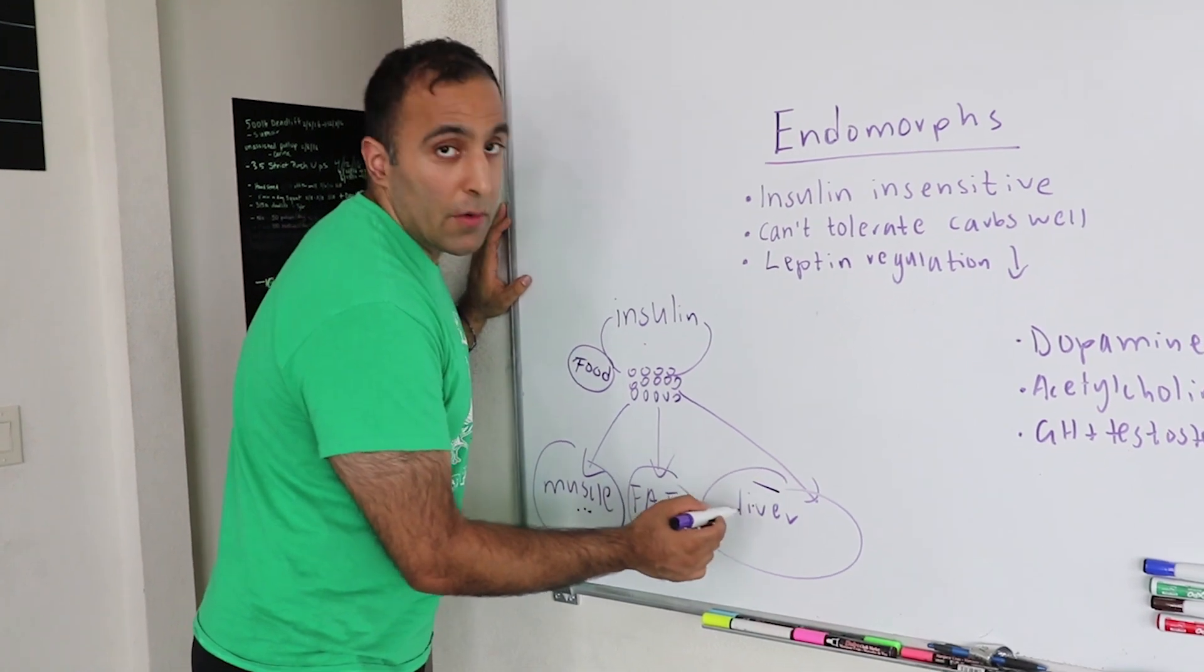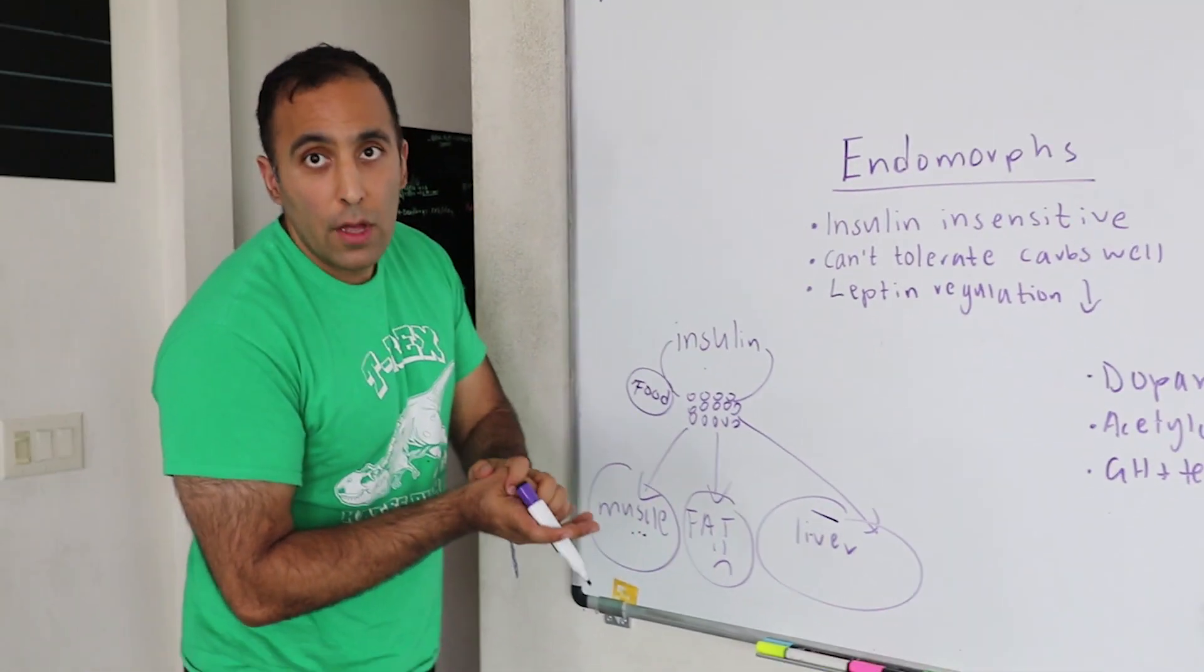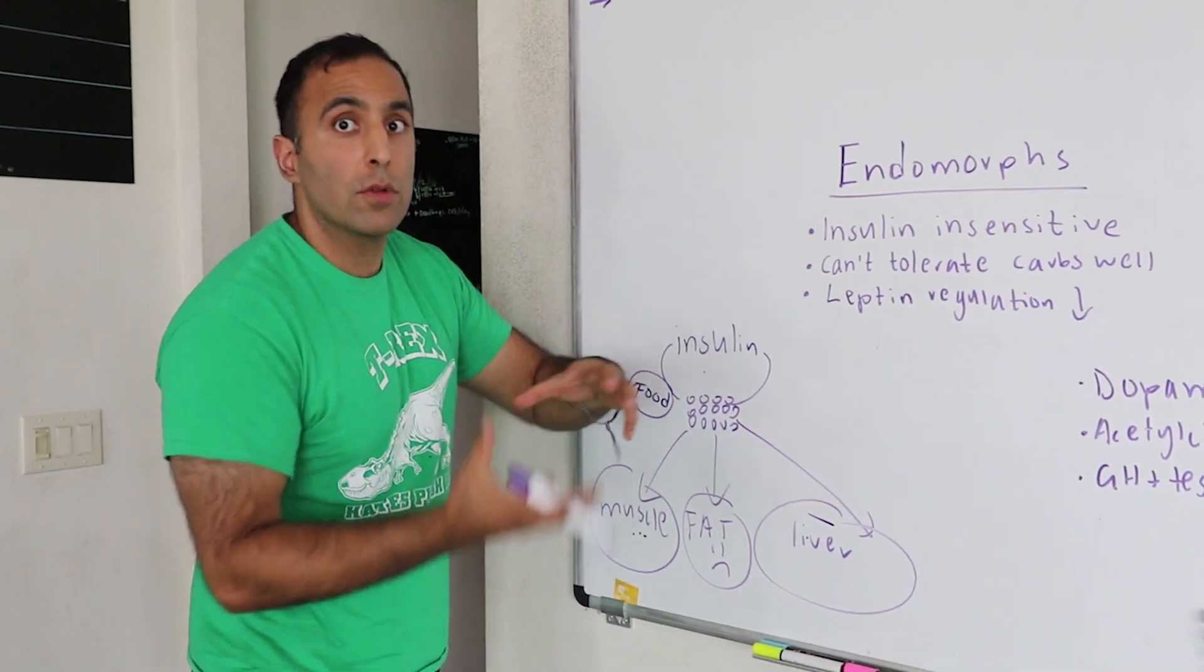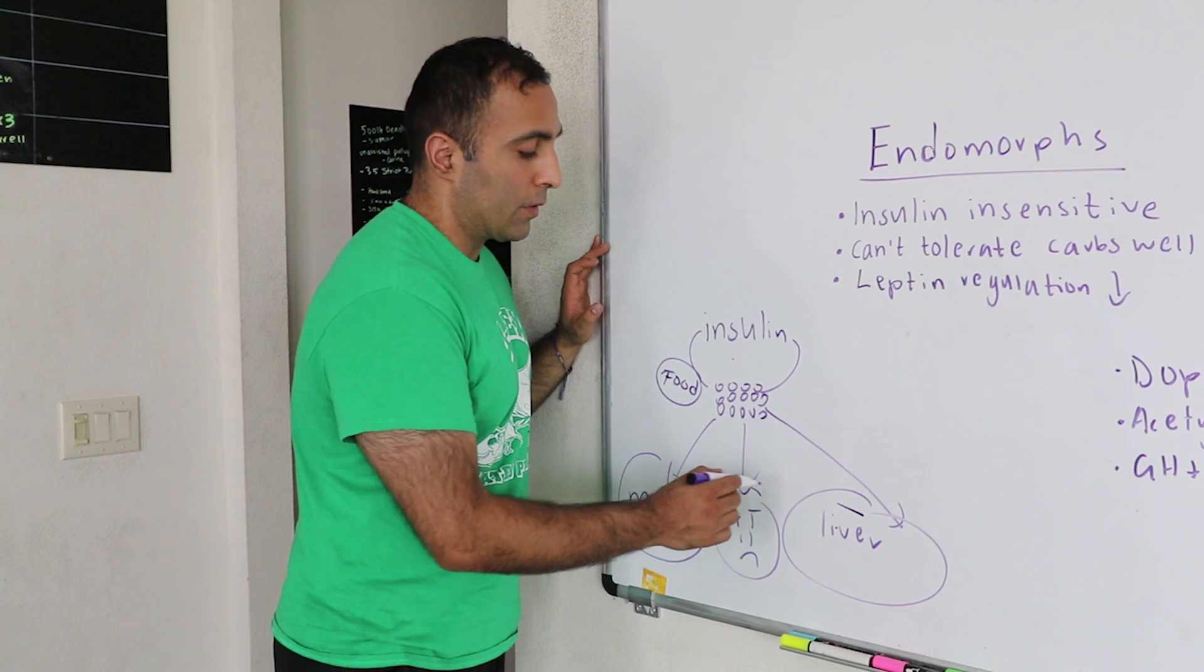But if we have too much stored in the liver as glycogen, which is the compound form of a bunch of glucose molecules together, then what happens is it spills over and goes into fat.